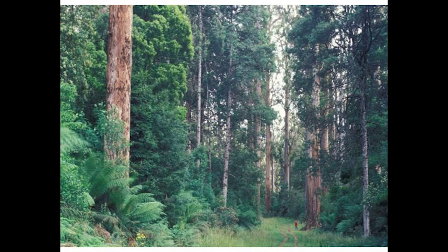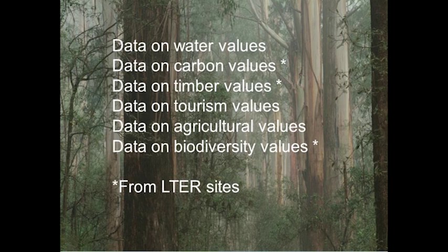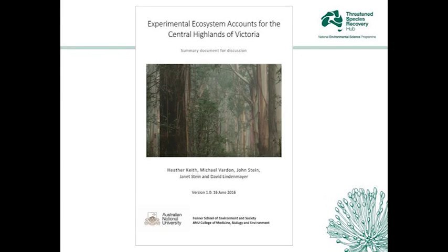From those long-term sites we've pulled together data on carbon values — not modelled, these are actual true measurements of carbon. We have data on biodiversity from those long-term sites, and also data on timber values. We've taken information from Melbourne Water on their water values, from VicForest on their timber values, tourism satellite accounts, and also the ABS. This provides a framework to parachute in these data sets to begin to understand the value of different ecosystem services and ecosystem assets, and we've produced an ecosystem account from that.